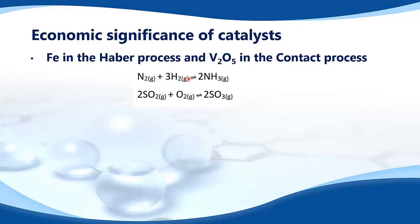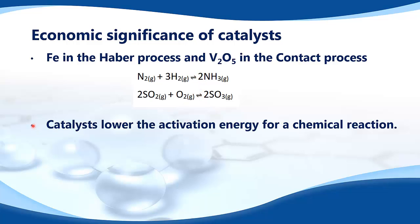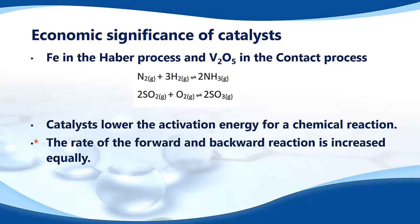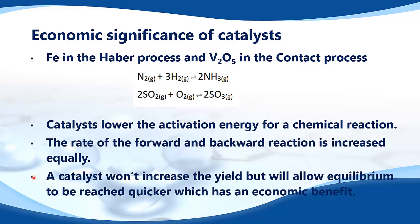You can see that they are both reversible reactions and they will reach an equilibrium. Catalysts lower the activation energy for a chemical reaction. The rate of the forward and backward reaction is increased equally. A catalyst won't increase the yield but will allow equilibrium to be reached quicker, which has an economic benefit.